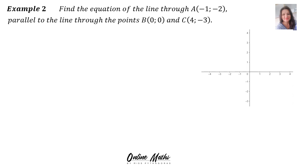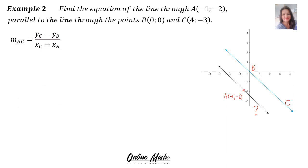Example 2: find the equation of the line through point A(−1, −2). We want to find the black line's equation, and our line is parallel to the line through point B(0, 0) and C(4, −3). We work out the gradient of the blue line BC, and once we know that gradient we use it for the black line because they are parallel.